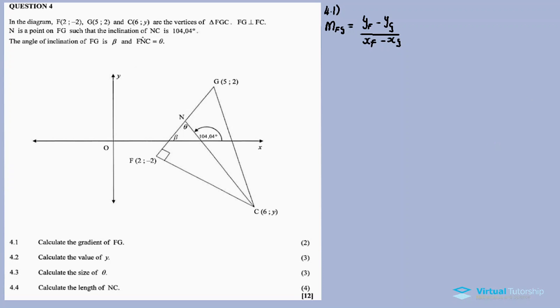The gradient of FG uses this formula. We substitute the given coordinates: Y_F is minus 2, Y_G is 2, X_F is 2, and X_G is 5. For the numerator we get minus 4, and for the denominator negative 3. Negative 4 divided by negative 3 is basically 4 over 3. So this is our gradient for line FG.